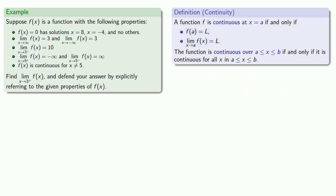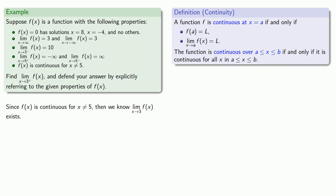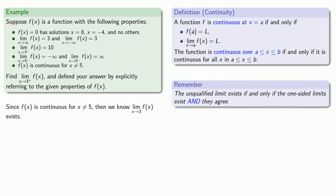We know that f of x is continuous for x not equal to 5, which means the limit as x approaches 3 of f of x must exist. Since we're finding a one-sided limit, we recall that the unqualified limit exists if and only if the one-sided limits exist and they agree. So the limit as x approaches 3 from above must equal the limit as x approaches 3 from below. We're given that limit from below equals 10, so the limit from above must also equal 10.